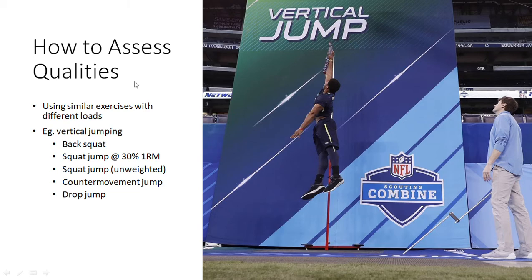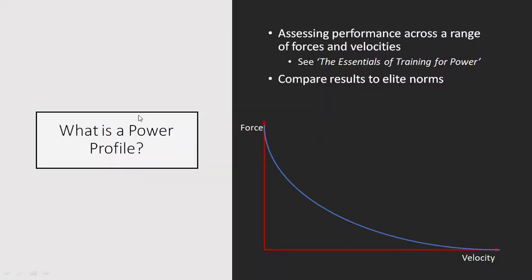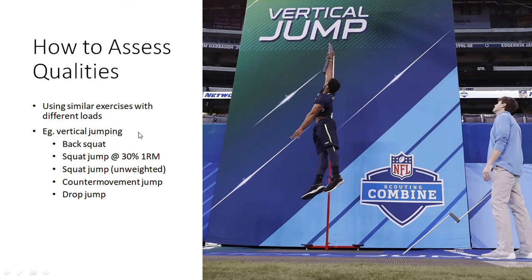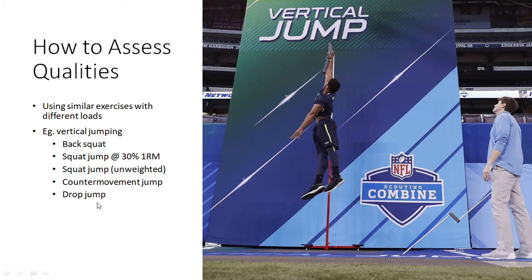So how do we actually assess these qualities along the force-velocity curve? We need to use a similar exercise but vary the load, so that we have exercises higher on the force end and lower on the velocity end, and exercises higher on the velocity end and lower on the force end, and everything in between. The easiest and probably only accurate way to do this is through vertical jumping. We do a 1RM back squat or a heavy 3RM test, then squat jumps at around 30% of the 1RM back squat, then an unweighted squat jump, followed by a countermovement jump, and then a drop jump. The velocity of each exercise increases but the force decreases — so the 1RM is maximum force and the drop jump is the least force-oriented exercise.